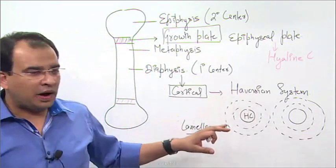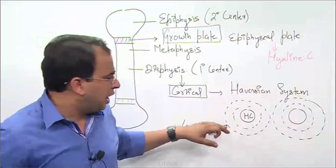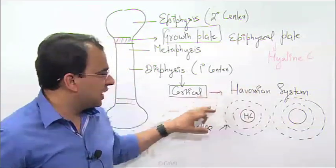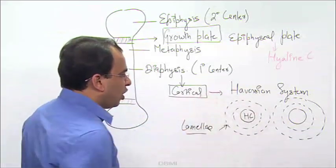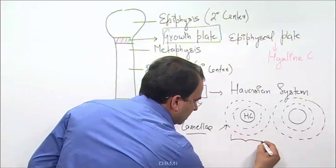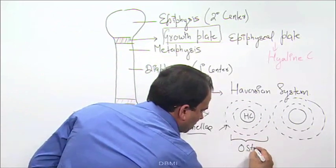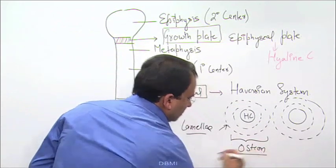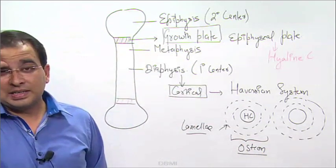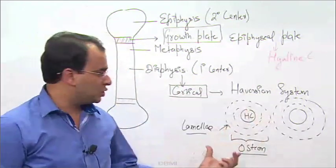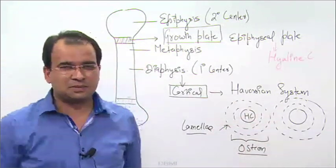This arrangement—one haversian canal along with all the osteocytes encircling it—is called one osteone. It is the unit of the haversian system. The osteone is one unit of the haversian system.